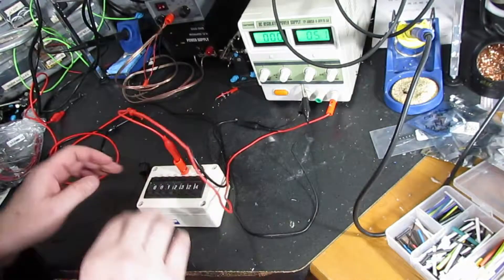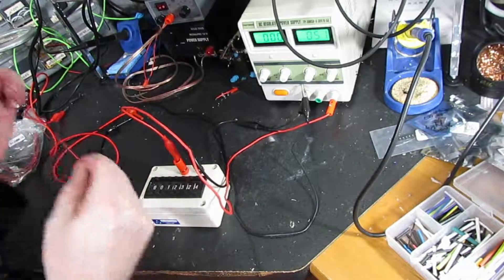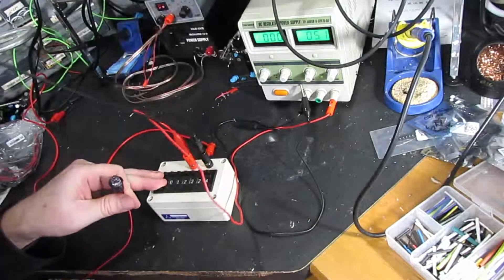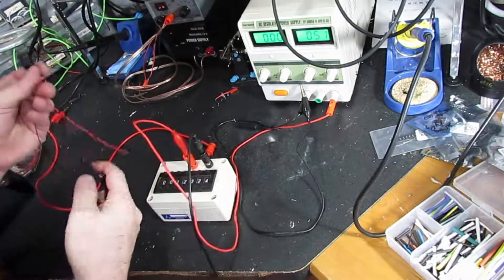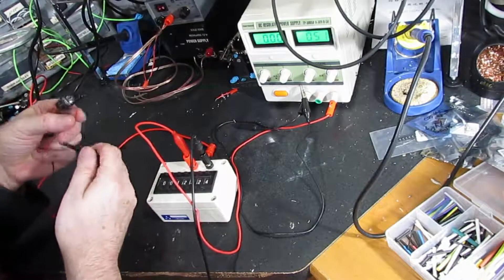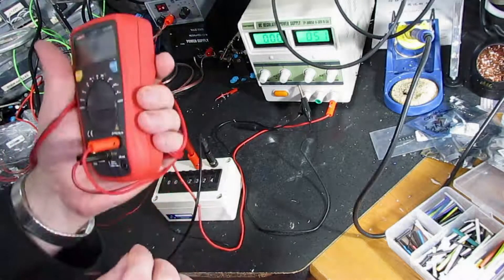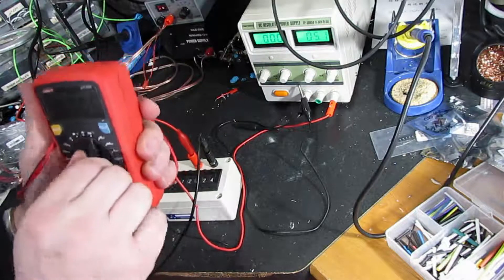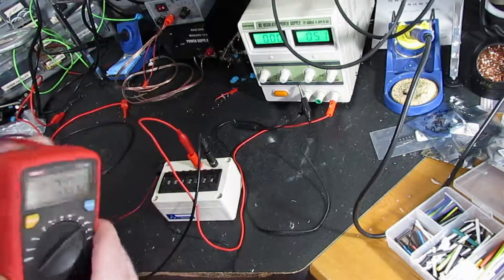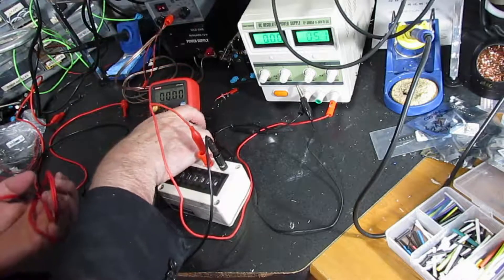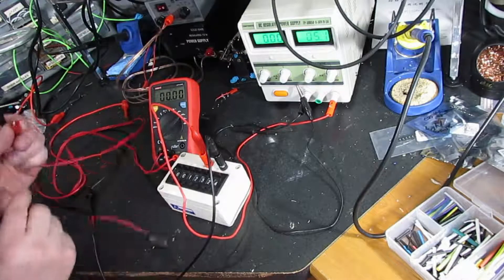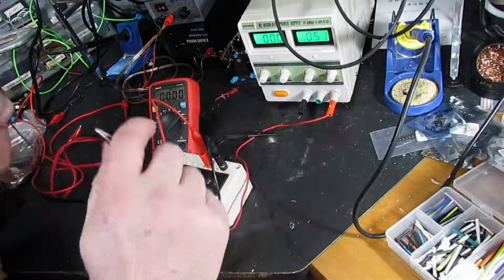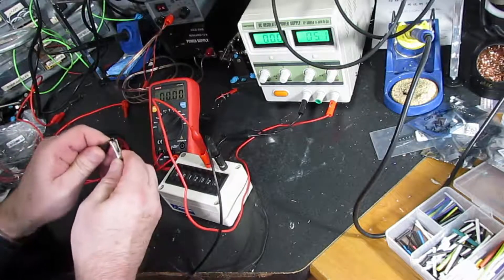Remember diodes will only allow current to pass in one direction. The positive is going to go in this way. Don't get confused. The black wire here which is normally negative is the positive coming out of this decade box. Grab a little multimeter for milliamps it goes in there. Set it for milliamps.